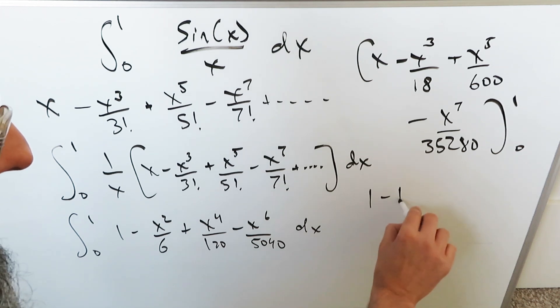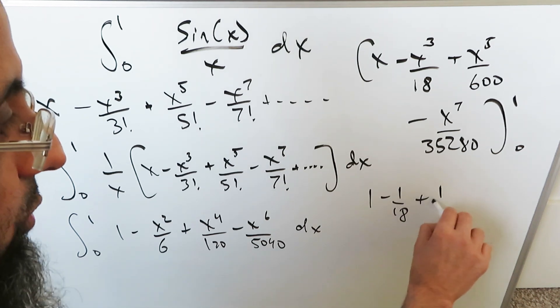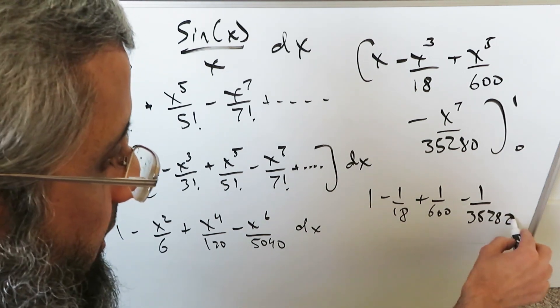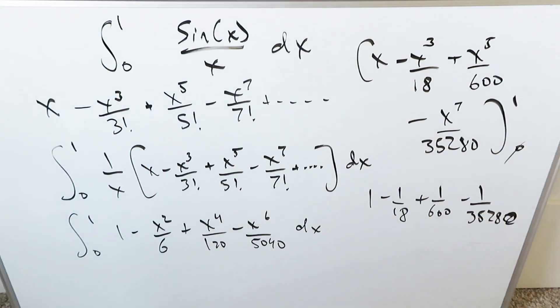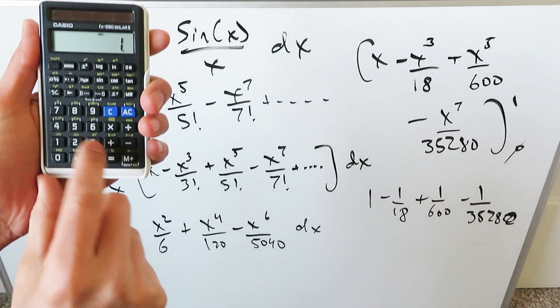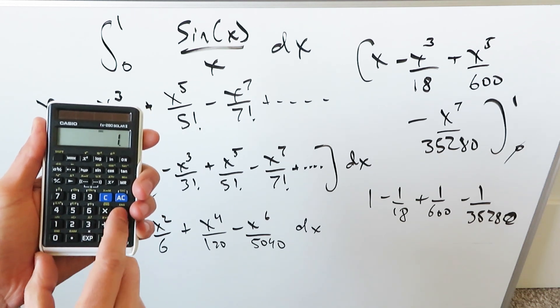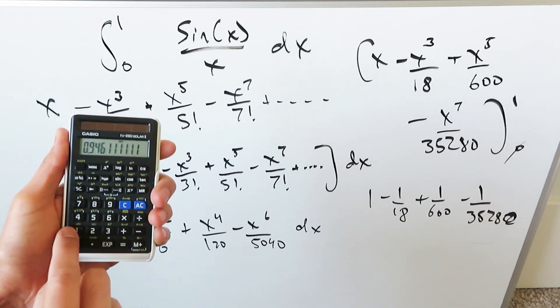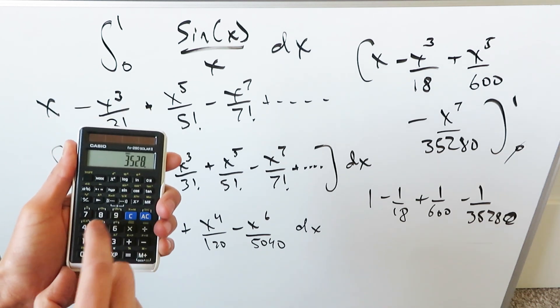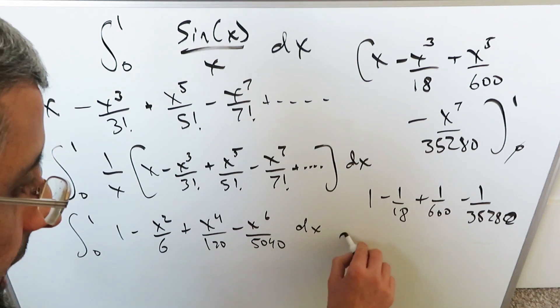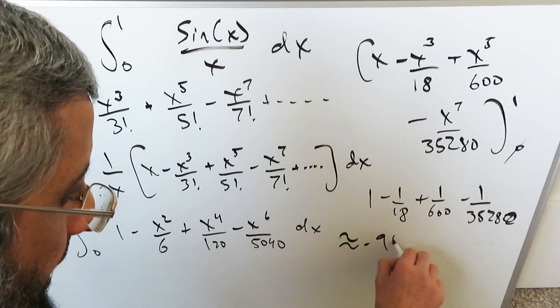We are in essence looking at 1 minus 1 over 18 plus 1 over 600 minus 1 over 35,280. The 0 is meaningless. Let's compute that on our calculator: 1 minus 1 divided by 18 plus 1 over 600 minus 1 divided by 35,280. And what do we have? 0.946. Our answer is going to be 0.946.